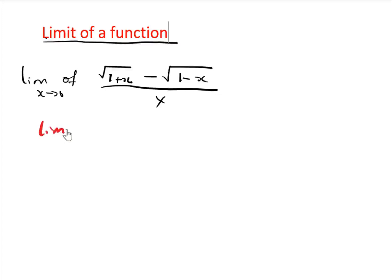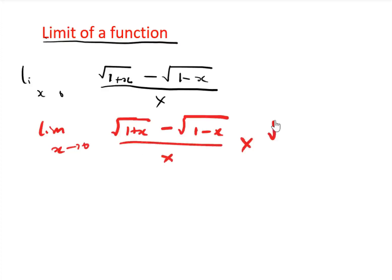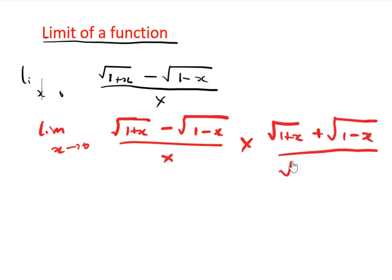Then the limit as x tends to 0: we have 1 plus x minus 1 minus x, divided by x. The conjugate of the numerator expression is square root of 1 plus x plus square root of 1 minus x, divided by square root of 1 minus x.